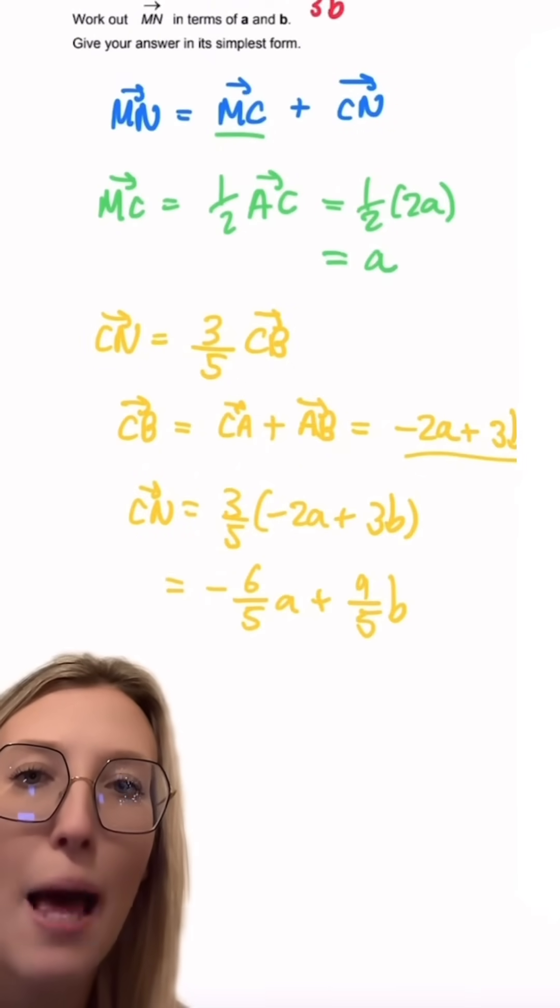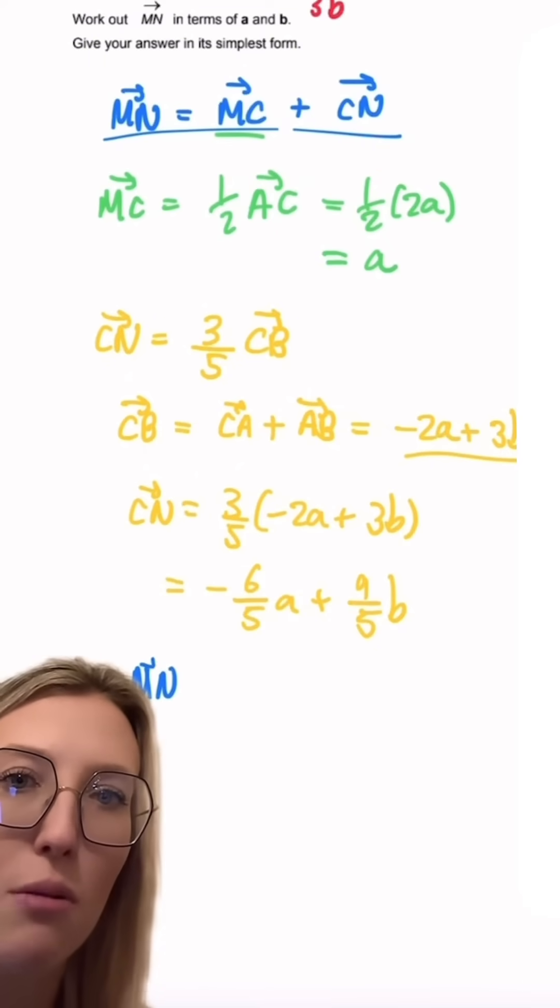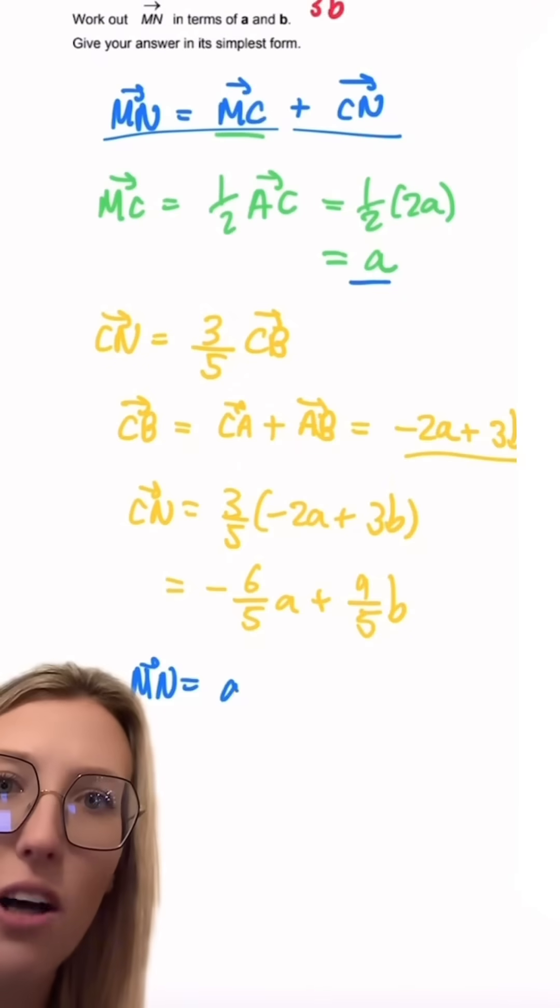So if we look at MN which is what we're originally trying to find, we've got MC which is just a, add our CN which is minus 6 over 5a add 9 over 5b.